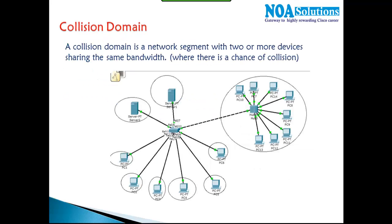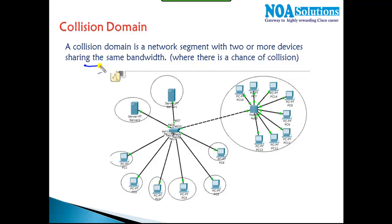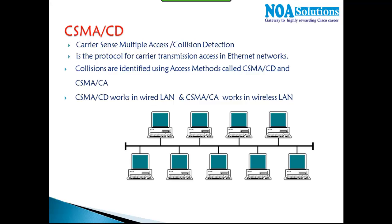The next thing we need to understand is the collision domain. The collision domain is the set of devices sharing the bandwidth in a network segment — where there is a possibility of collision. Before we get into collision domain, let's understand the concept of CSMA/CD — Carrier Sense Multiple Access with Collision Detection.